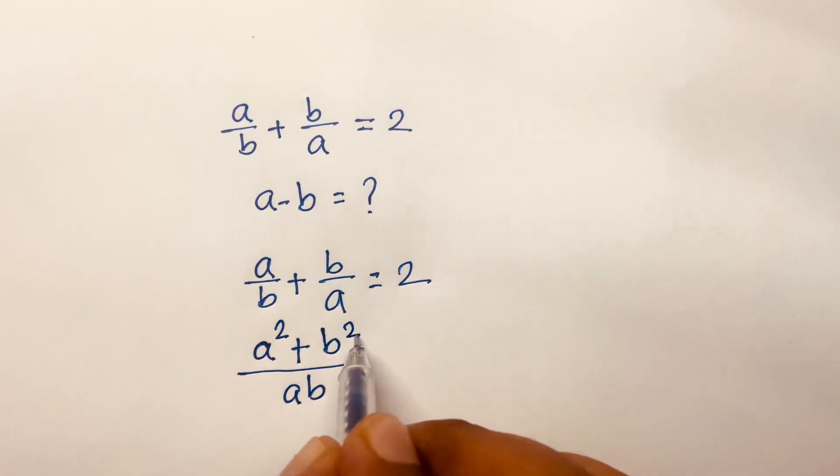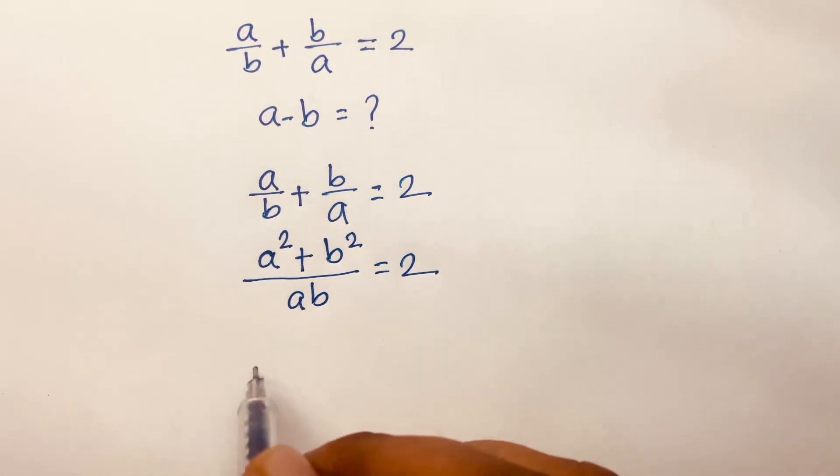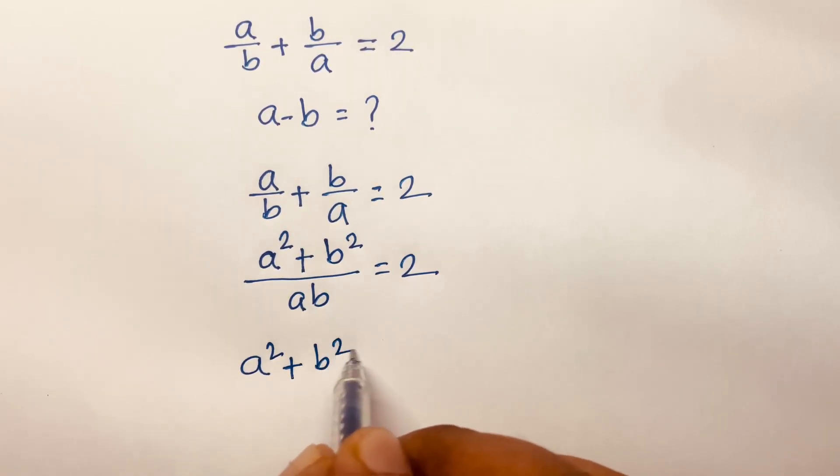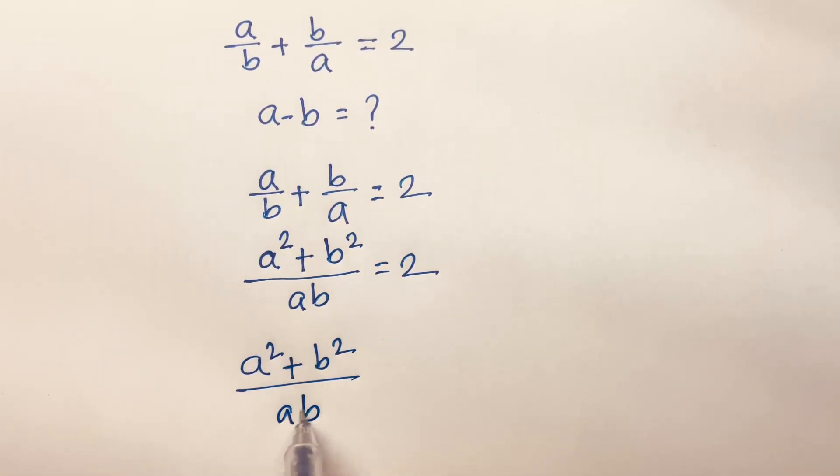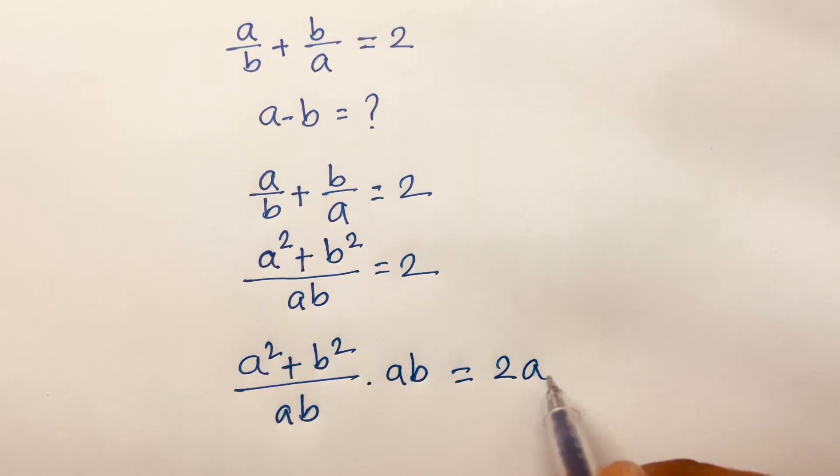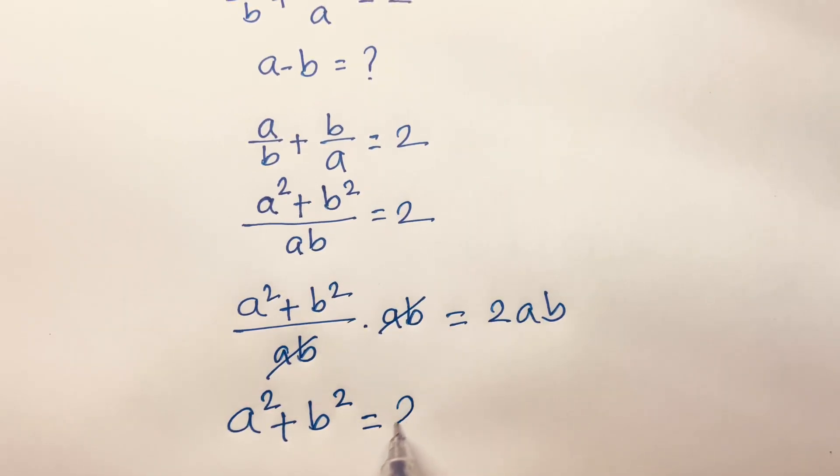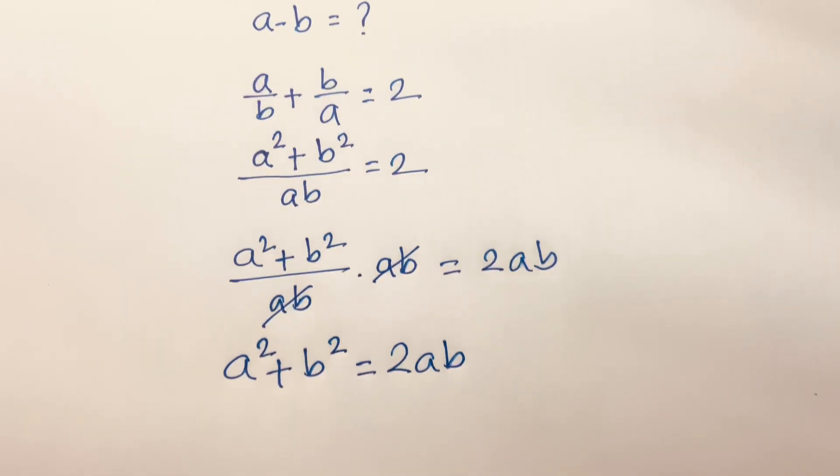which is b². So (a² + b²)/ab = 2. Then I multiply both sides by ab, so ab cancels and we find a² + b² = 2ab.